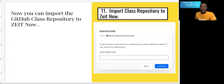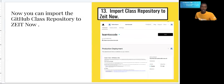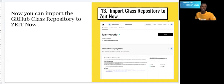Currently everything is in the root directory. In future lessons, as we add more code, we'll be adding more directories. Hit continue, and it will run a check to make sure it can build. We're not going to change these settings in this lesson — in the future we'll be changing how it's deployed. Click deploy, and it will deploy out to the ZEIT Now server. Within a few minutes you'll be able to click 'Visit' and should see the website.